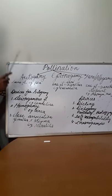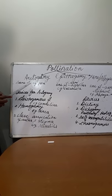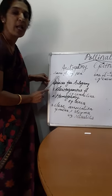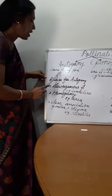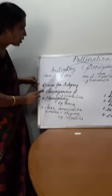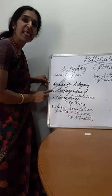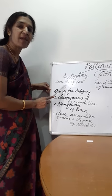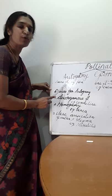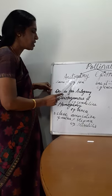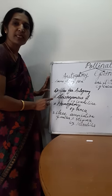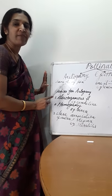Now let us see what is autogamy. In autogamy, pollination takes place — that is, transfer of pollen grains from the anther to the stigma of the same flower. That is a bisexual flower. In the same flower, transfer of pollen grains from anther to stigma takes place. Here the genetic constitution is the same, so there will not be any variation.